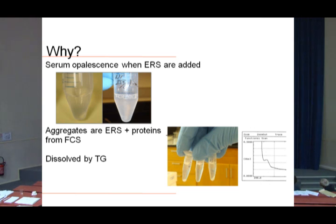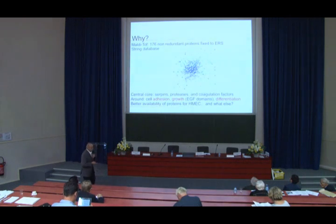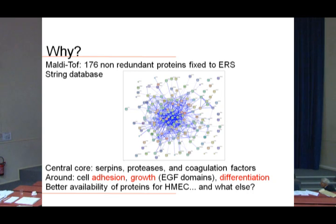That opalescent network can be disrupted by chaotropic ions, releasing proteins into the supernatant. Those proteins were analyzed by MALDI-TOF, and we found nearly 200 proteins aggregated to the nanoparticles. When we subjected those proteins to the STRING database to find strong interactors, the central core was represented mainly by serpins, proteases, and coagulation factors. Around that central core, there were proteins involved in cell adhesion, growth with EGF domains, and in differentiation or migration.